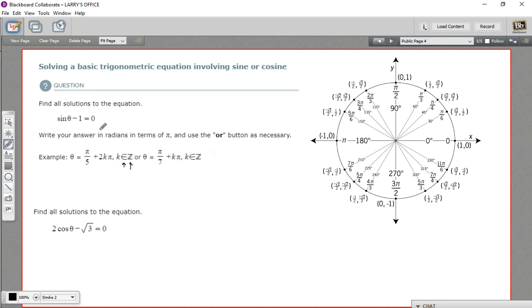The first one says sine of theta minus 1 equals 0. We want to first solve this for sine of theta. So we just add 1 to both sides, and we get sine of theta equals 1. So the next step is to figure out where on the unit circle the sine of theta equals 1. You probably know that the sine is the y value, so here is where the sine of theta equals 1, which means theta is pi over 2. So that's part of our answer. Theta equals pi over 2.